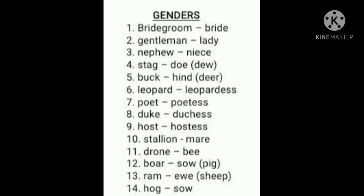Next animal: S-H-E-E-P, sheep. Do you know it very well? For the male category we can call R-A-M, ram. And the female category we can call E-W-E, ewe. Next: H-O-G, hog. S-O-W, sow. This also comes under the deer category animal. The male category we can call hog and the female category we can call sow.